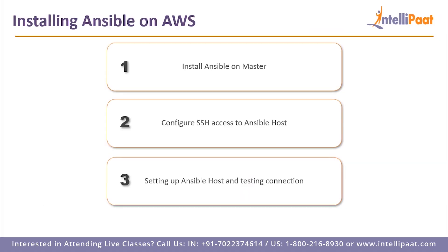The first step is to install Ansible on the master. You do not have to install Ansible on the slave — Ansible only requires installation on the master. On the slaves, it just requires Python to be installed; if Python is installed, Ansible can directly connect to that slave. Step two is to configure SSH from the master to the slave without any key or password. Step three is to set up Ansible hosts and test the connection.